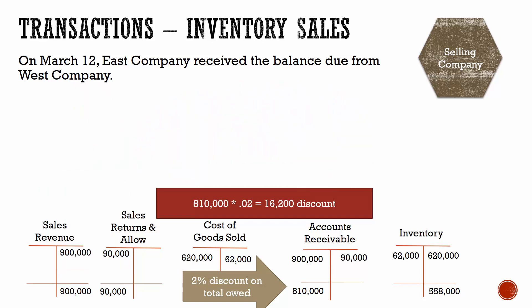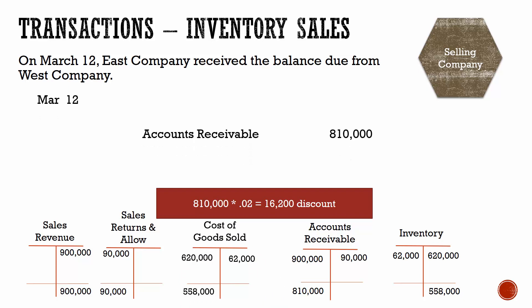Now that we've calculated the discount, we can do the journal entry. We credit accounts receivable for the full balance they owe us because they're paying off their entire bill. However, they're not going to pay all of that in cash because they received a discount. So we debit sales discounts for $16,200, and then we debit cash for the remaining amount received from West Company. Sales discounts is also a contra-revenue account — it hangs with the revenues on the income statement but decreases revenues overall.